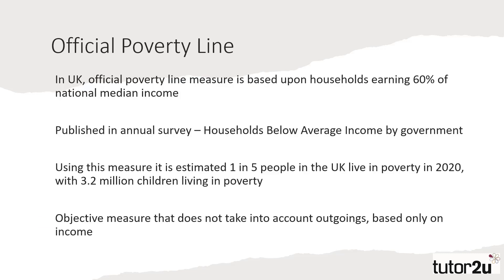Firstly, the official poverty line. This measure is based upon households earning less than 60% of the UK median income, which in 2021 was £31,700 per person. The median income is used as a more reliable measure than the average or mean income, as there are statistical outliers — the top 10% of the UK population having 44% of the UK's wealth, whilst the bottom 50% control just 9% according to the Equality Trust. This means that an individual earning less than £19,000 a year is technically in poverty according to this measure.